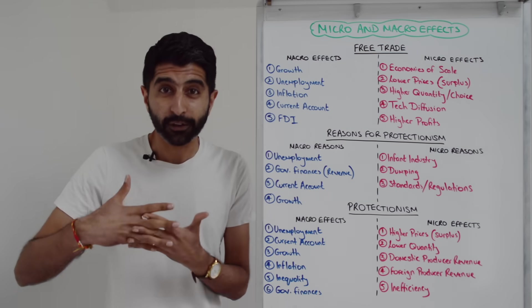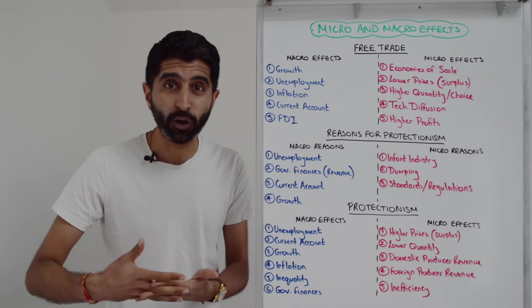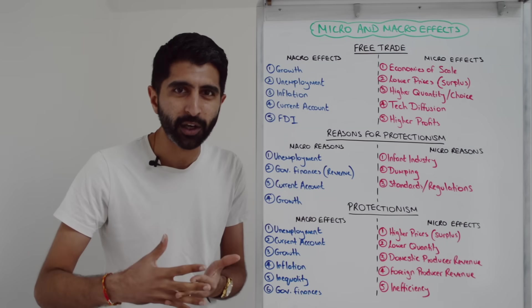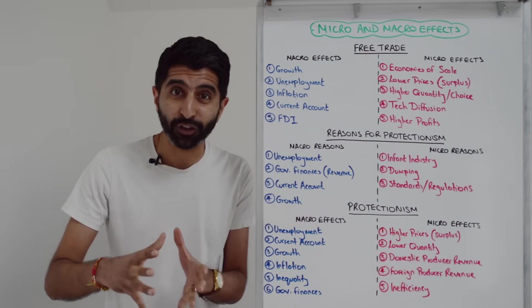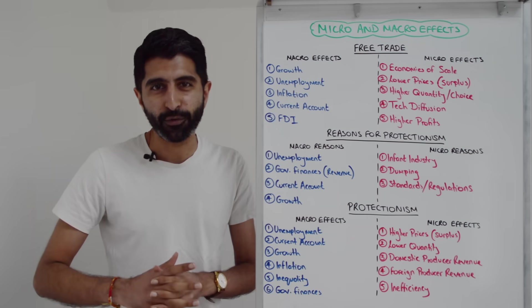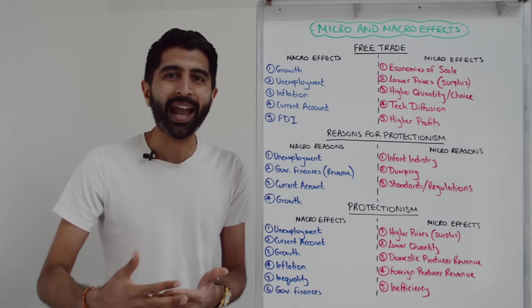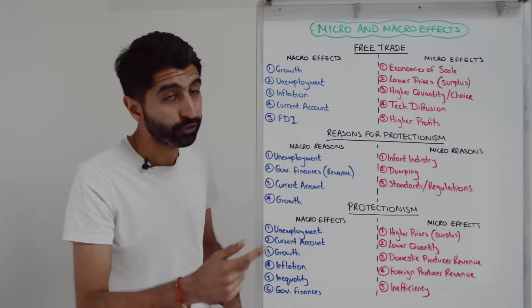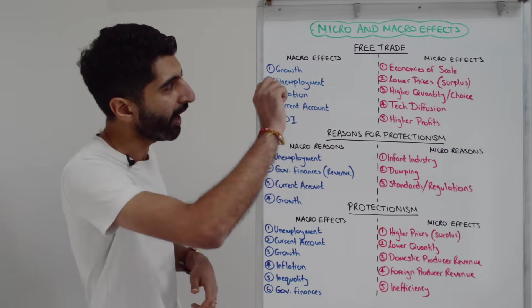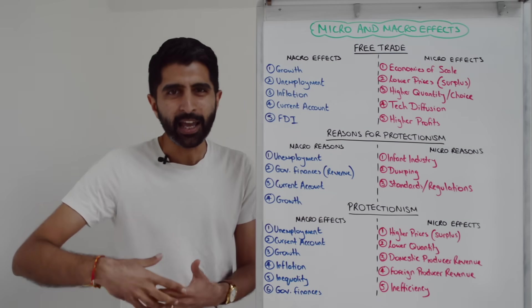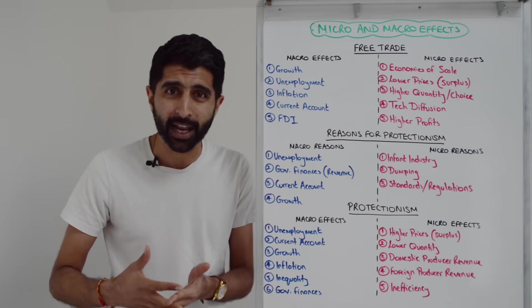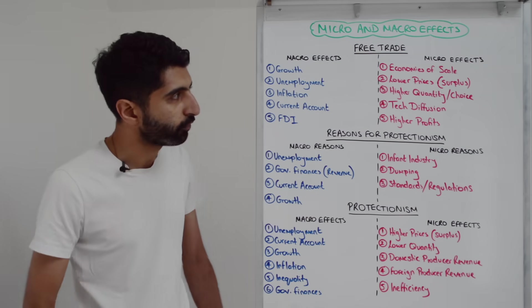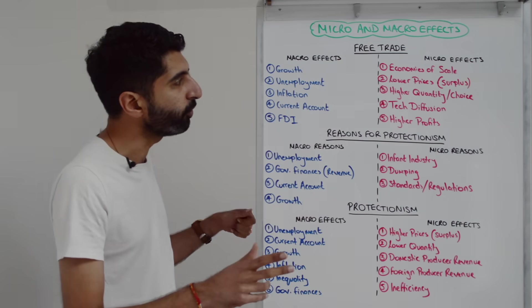An obvious macro effect is to talk about economic growth: how countries who exploit their comparative advantage, specialize, have a surplus, can then export that to the rest of the world, increasing X, X minus M, AD, and that takes you to higher growth. It also takes you to job creation. The other side of that is looking at industries who aren't internationally competitive, where maybe jobs are lost as those industries decline. So unemployment — you can go both ways.